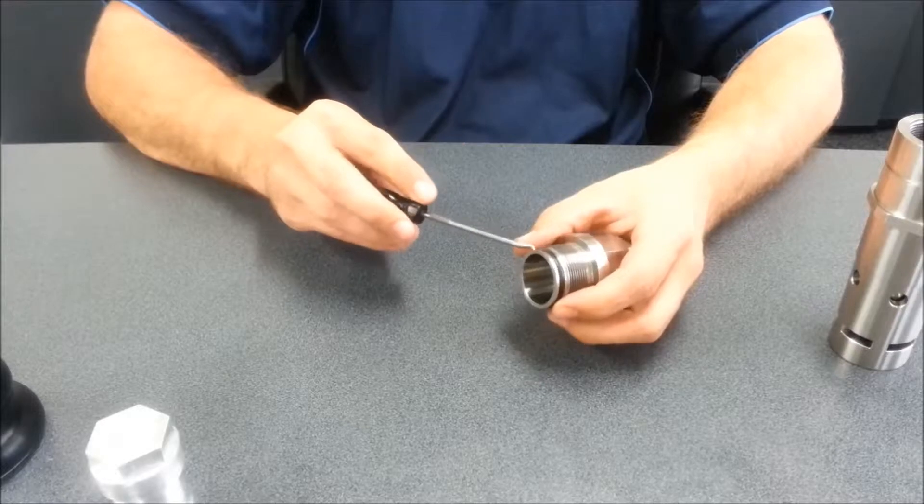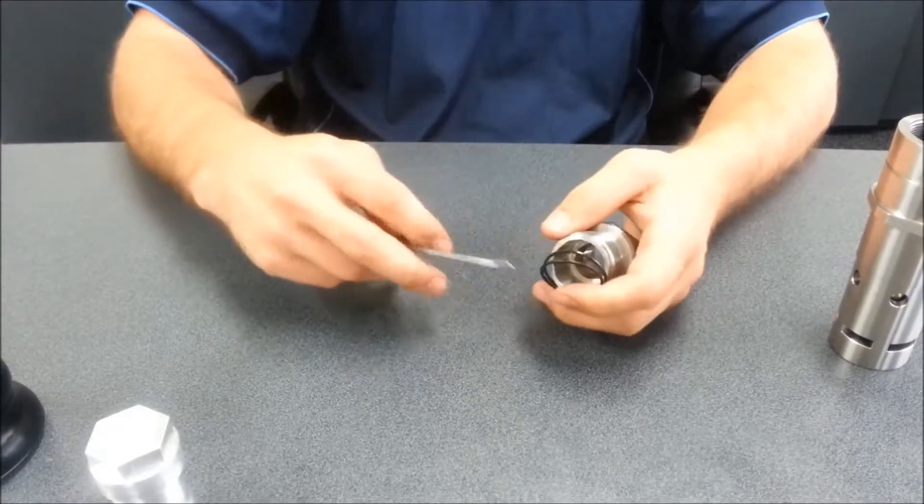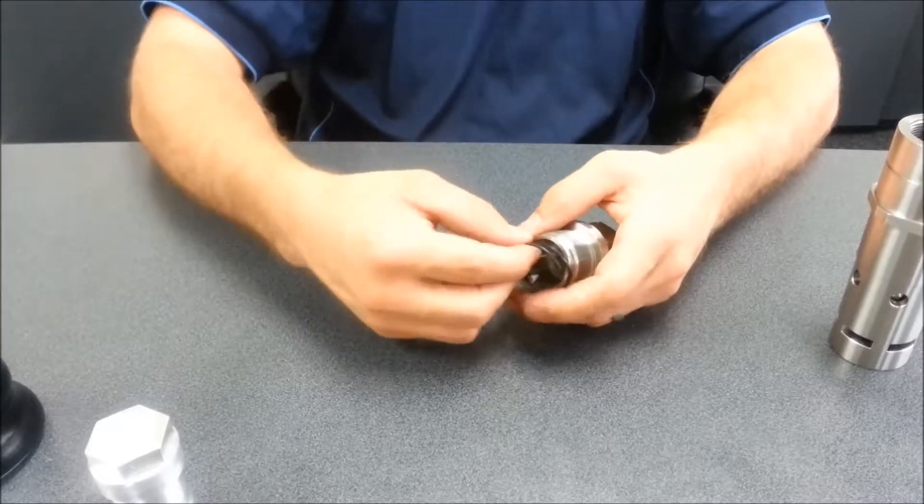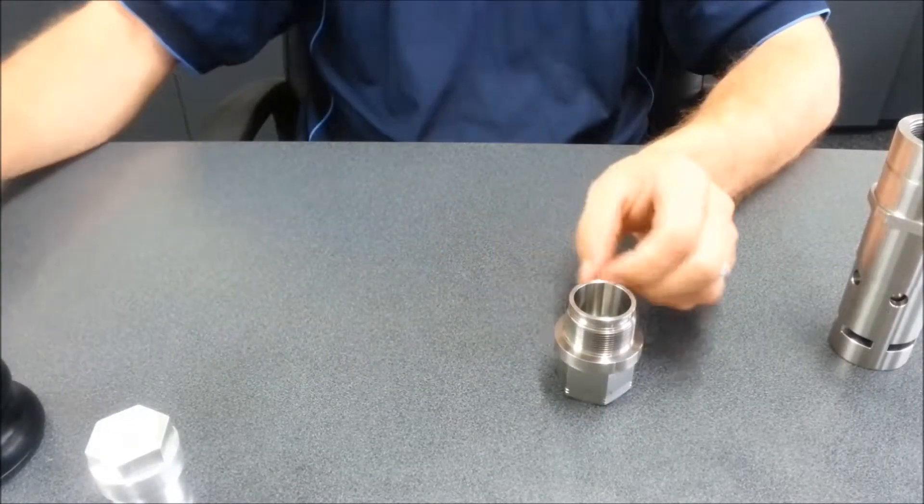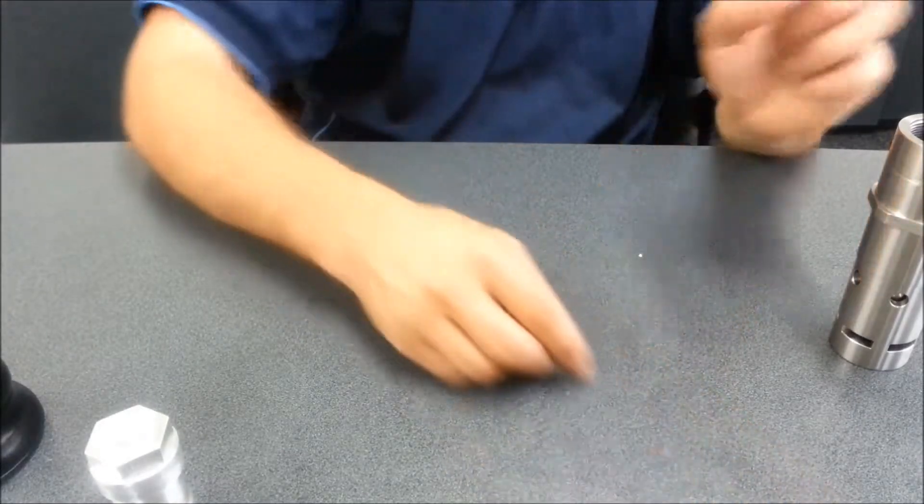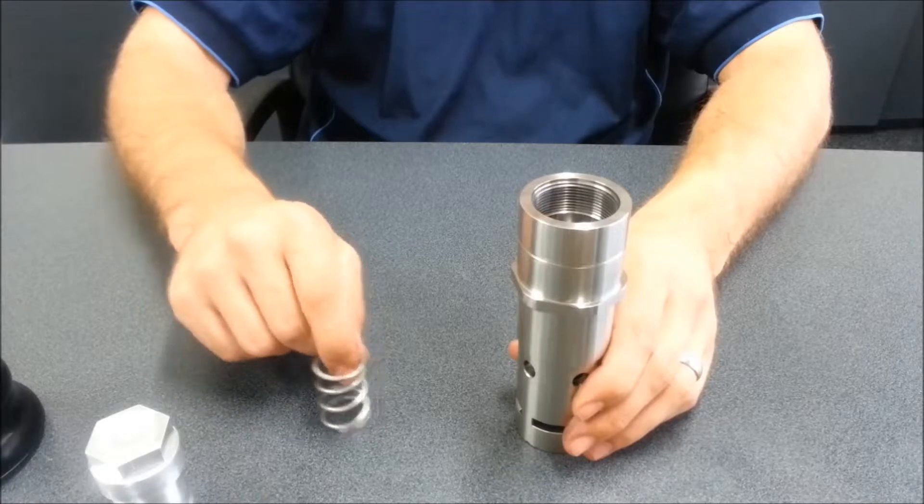Use a pick to carefully remove the o-ring and backup from the end cap. Discard these. Put the end cap to one side. Remove the cap spring and put to one side.